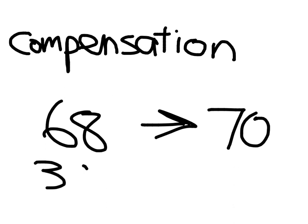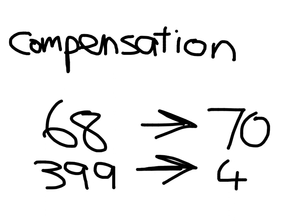If we have the number 399 we might compensate that number up to 400 but if we give it 1 we have to take it away later. Let's have a look at what that looks like in a question.